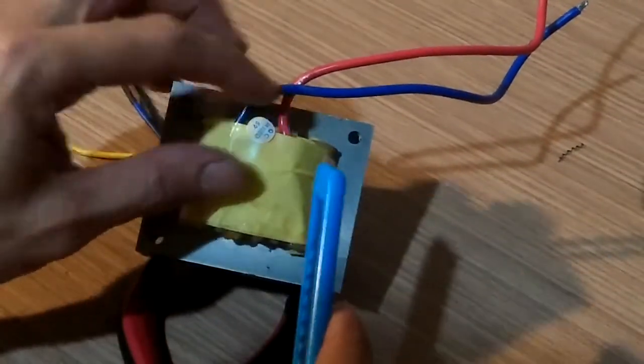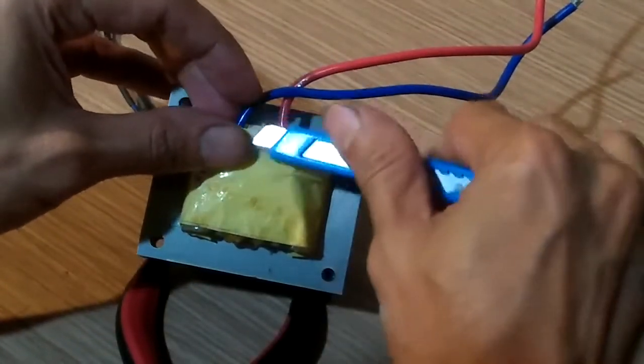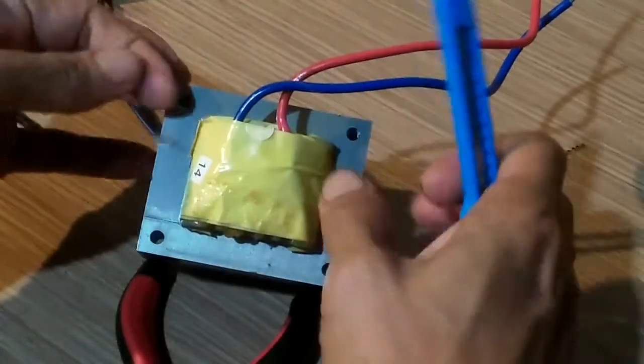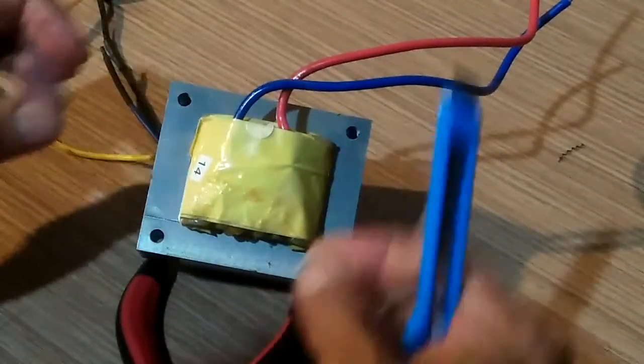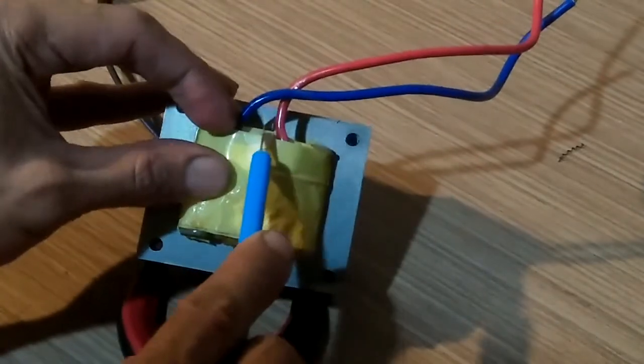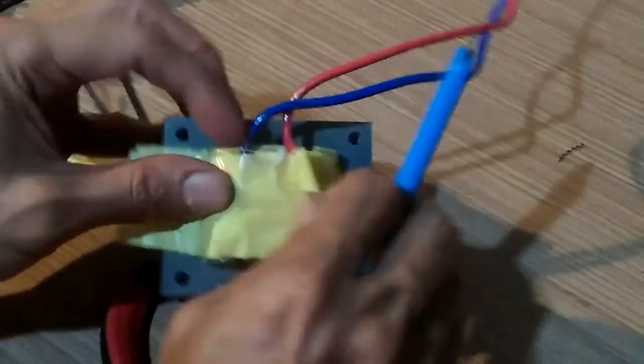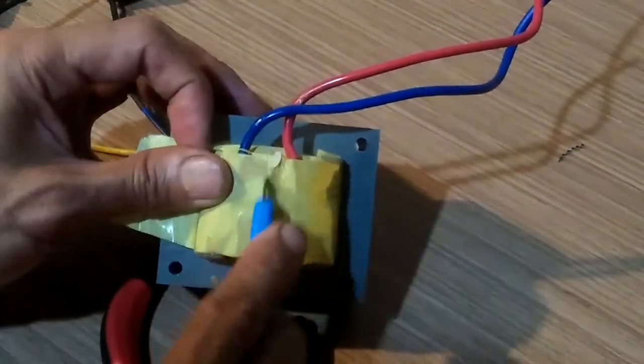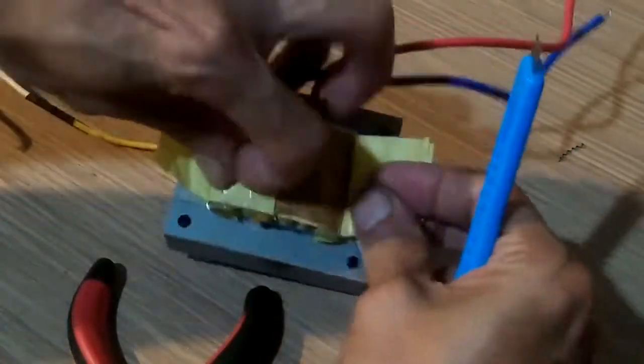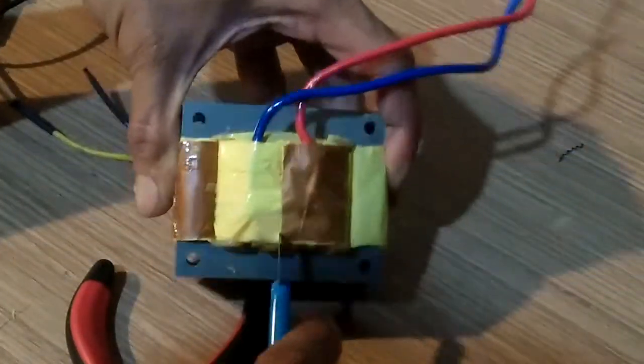There is a neat trick we can do to the UPS transformer. We can rewire the secondary windings to give us more than 12 volts output and that is what I'm about to show you. So first, cut the insulation to reveal the ends of the secondary windings.